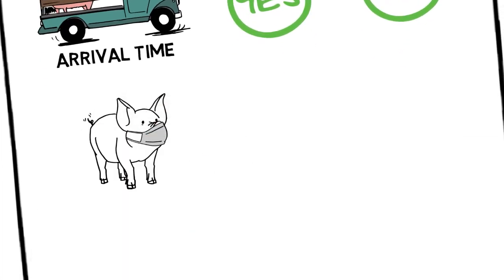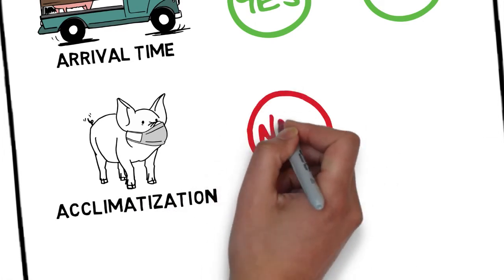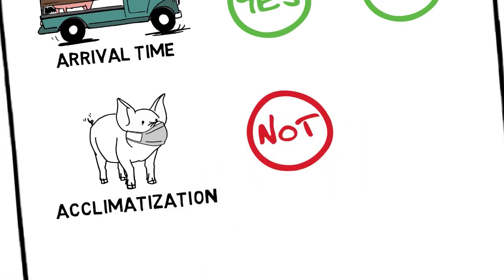During acclimatization, gilts will be vaccinated. In order to evaluate the immunization process, samples will be taken from the animals to perform ELISA, three or four weeks post-vaccination, in order to confirm that this immunization has actually taken place.